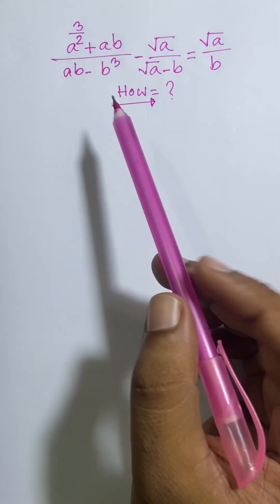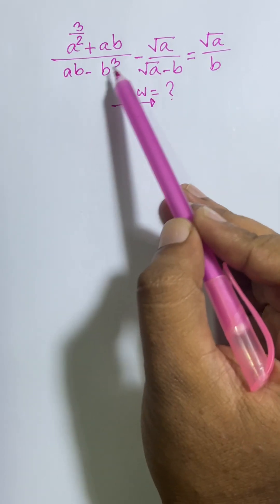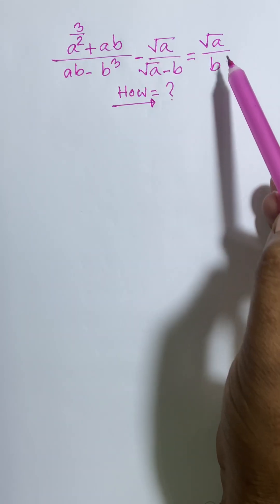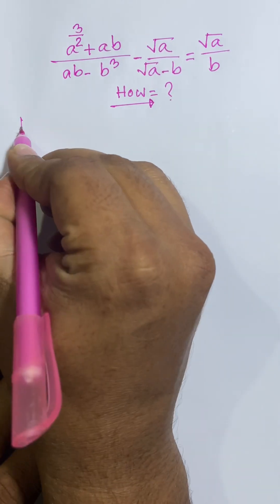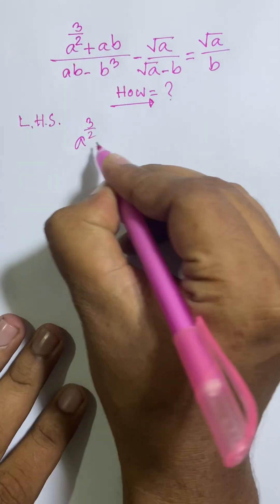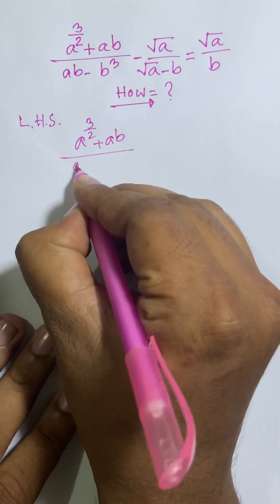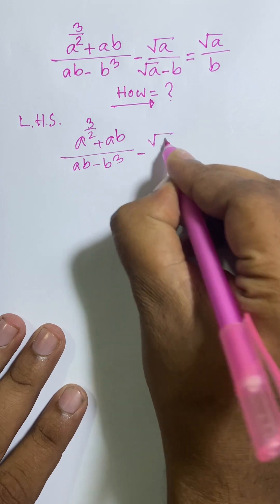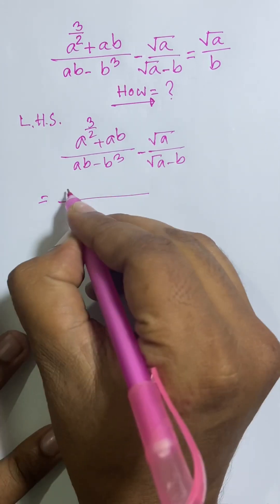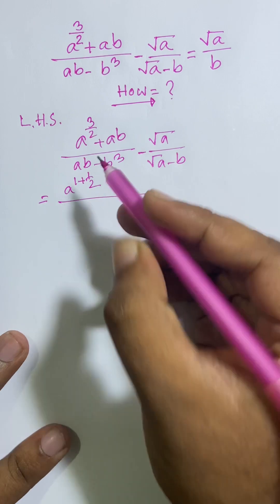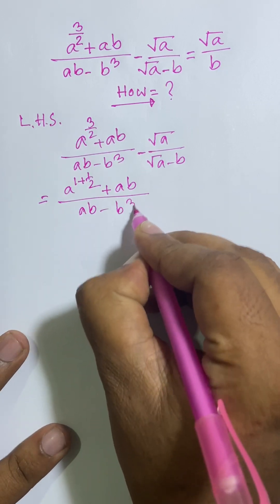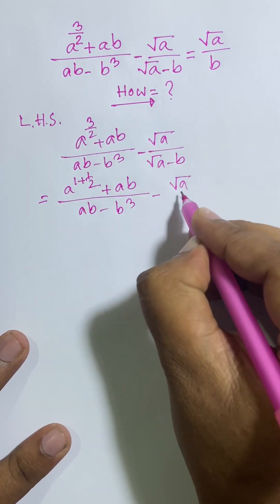I will solve this question: a to the power 3 by 2, plus ab over (ab minus b squared), minus root over a over (root over a minus b), is equal to root over a by b. I will prove root over a by b. So left hand side: a to the power 3 by 2 plus ab over (ab minus b squared) minus root over a over (root over a minus b). Now I can say a to the power 1 plus half — we know that 1 plus half is equal to 3 by 2.